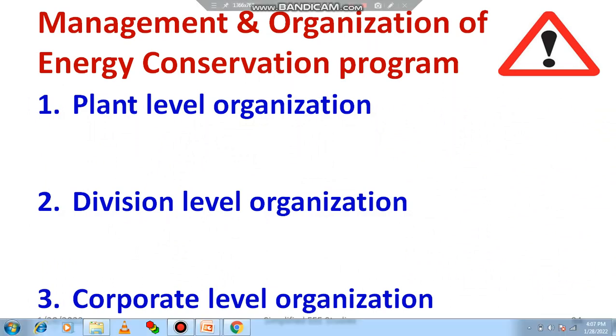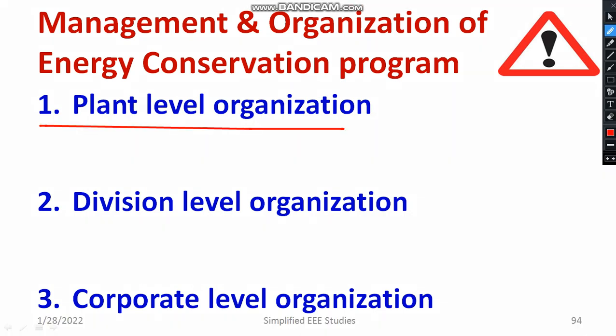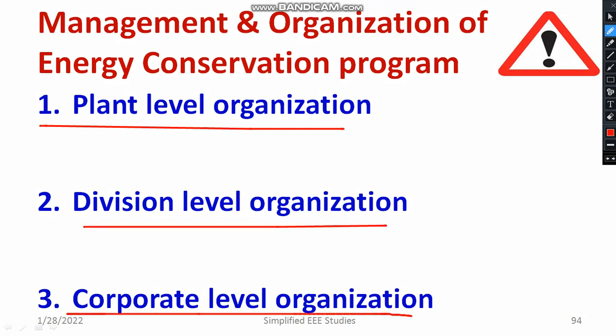You can have a checklist. There are three types: plant level organization, division level organization, and corporate level organization. These are the three types of energy management programs applicable for a particular organization. I am going to discuss what is meant by plant level organization.